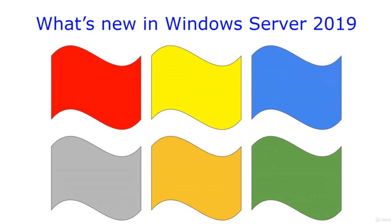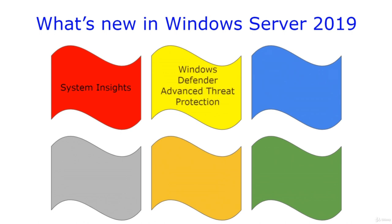So what is new in Windows Server 2019? To start, System Insights, which brings local predictive analytics capabilities to Windows Server — this is all part of the AI machine learning trend. Next is Windows Defender Advanced Threat Protection. With Server 2019, it has more added to it, like reducing the attack surface, protecting endpoint networks, protecting folders from ransomware, and even more protection.